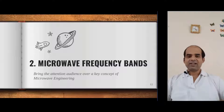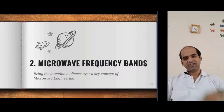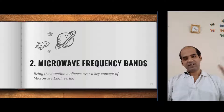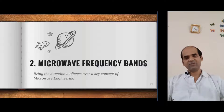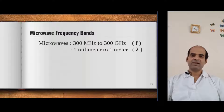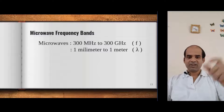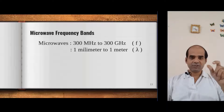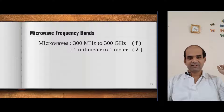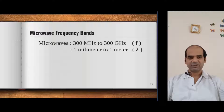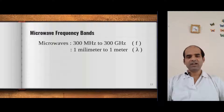Last class I already told it is a band of frequency in which transmission is taking place. So that band we are going to discuss, and it is further subdivided into many bands. These microwave frequency bands are ranging from 300 megahertz to 300 gigahertz. That is also 0.3 gigahertz to 300 gigahertz — the same thing.